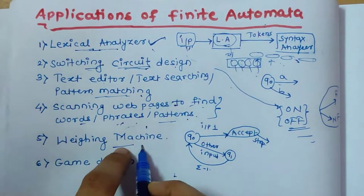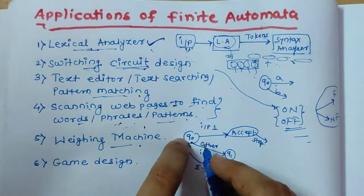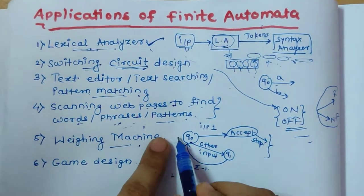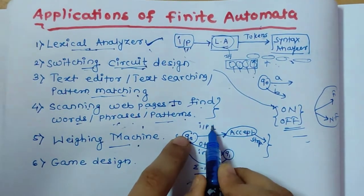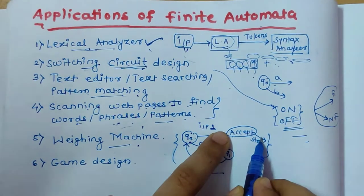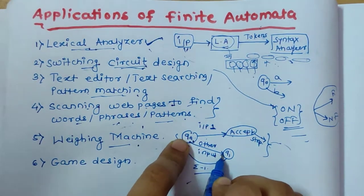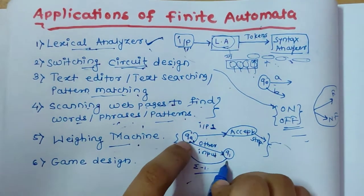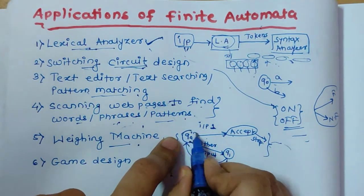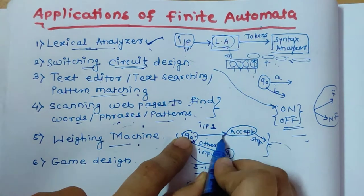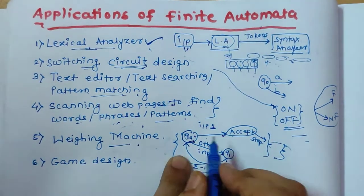A simple example is a weighing machine. In a weighing machine, you have to give a coin as input, and if that coin is correct, the machine will show you the weight. This can be represented with a simple finite automata. Suppose Q0 is the initial state and if we provide a valid coin of 1, that coin will be accepted, your weight will be shown, and you will stop. Otherwise, if you provide some other coin, suppose there are 3 attempts before halting the machine — until then, you can try and reach back to the initial state Q0 until you provide a valid coin. This is how finite automata is applicable in a weighing machine.